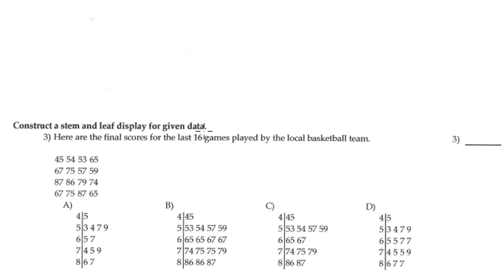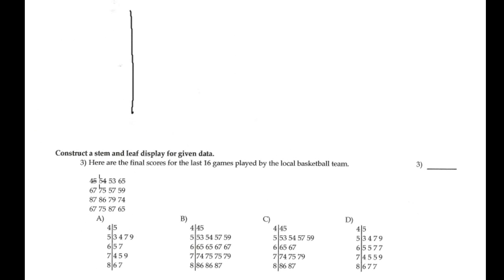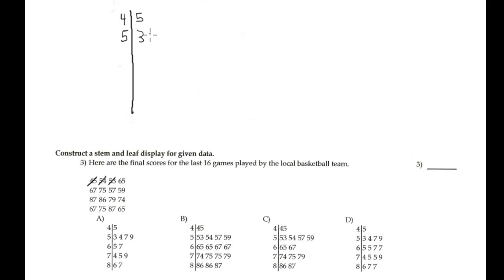Now construct the stem-and-leaf display for the given data. The stem is on the right. The first stem is 4, with leaf 45. For stem 5, the first entry is 53, then 54, then 84. After that we have no more 50s.